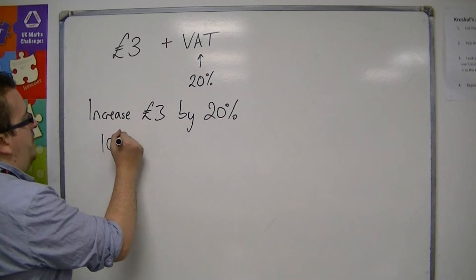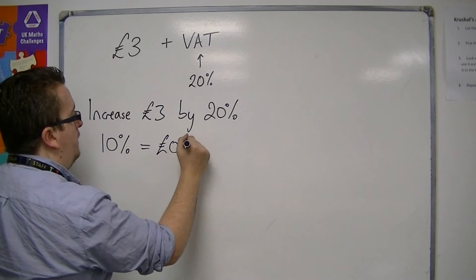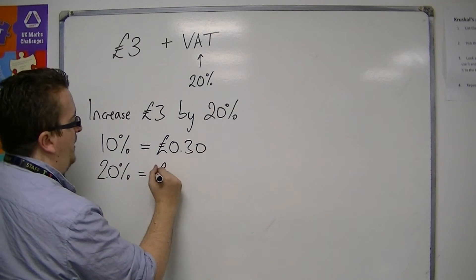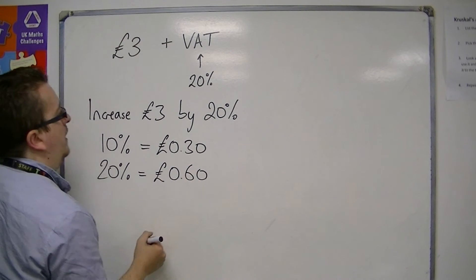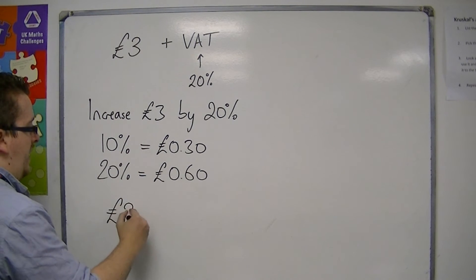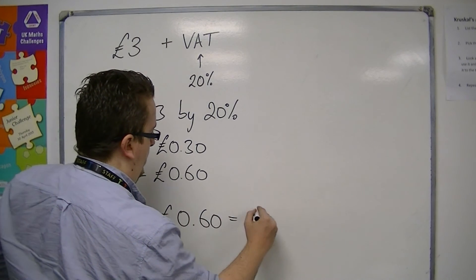10% of £3 would be 30p, so 20% would be 60p. If we increase £3 by 20%, we're getting £3 plus the 60p is £3.60.